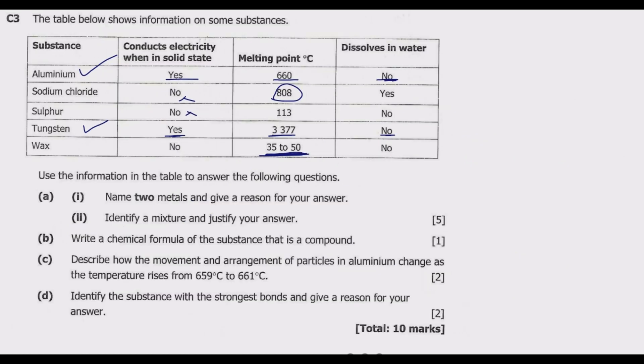Question B: Write a chemical formula of a substance that is a compound. If you check here we only have one which is a compound, which is sodium chloride. So sodium chloride is NaCl. So this is the formula for the compound.